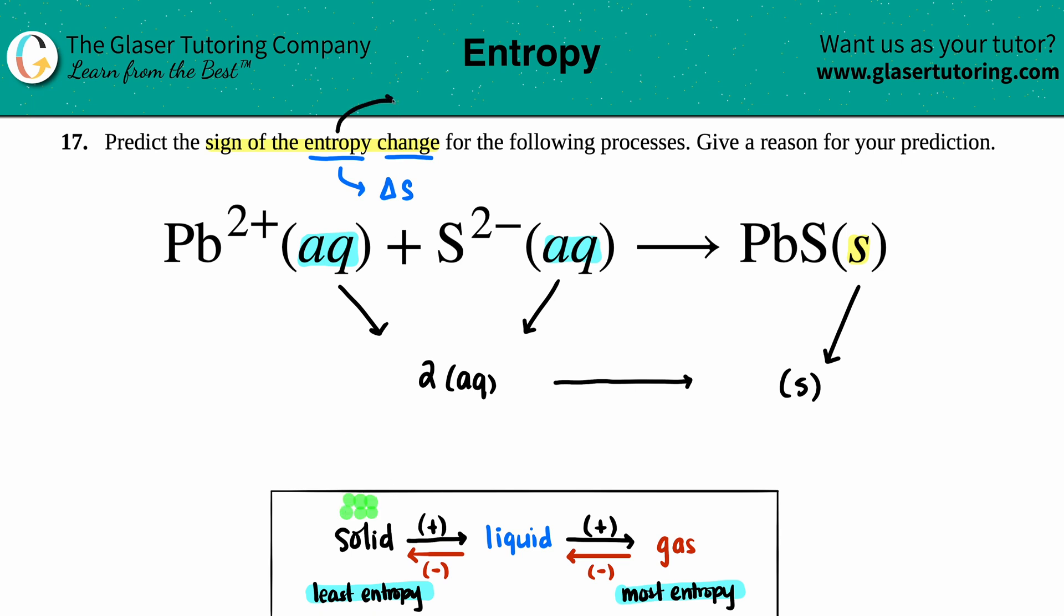Keep in mind that entropy is talking about the randomness or the chaos or the disorder in the molecules. Gas, on the other hand - the molecules are free to roam around all over the place, so more random, more chaos in the system.